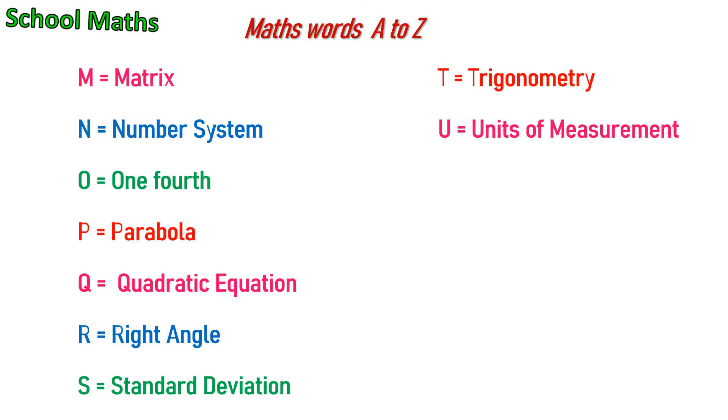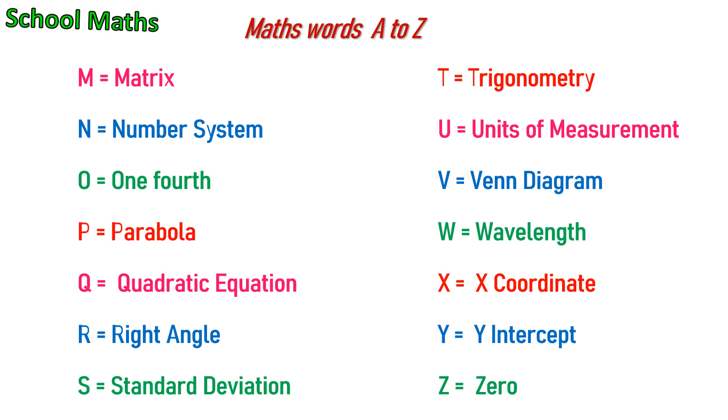U for unit of measurement. V for Venn diagram. W for wavelength. X for x coordinate. Y for y-intercept. Z for zero.